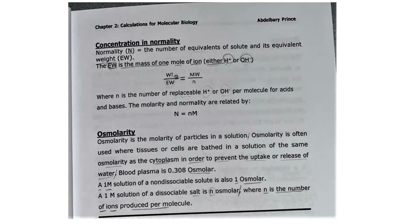Concentration and normality. Normality is the number of equivalents of solute and its equivalent weight. The equivalent weight is the molecular weight divided by n, where n is the number of replaceable H+ or OH- per molecule for acids and bases. The molarity and normality are related by N equals n times M. Osmolarity is the molarity of particles in a solution. Osmolarity is often used where tissues or cells are placed in a solution of the same osmolarity as the cytoplasm in order to prevent the uptake or release of water.